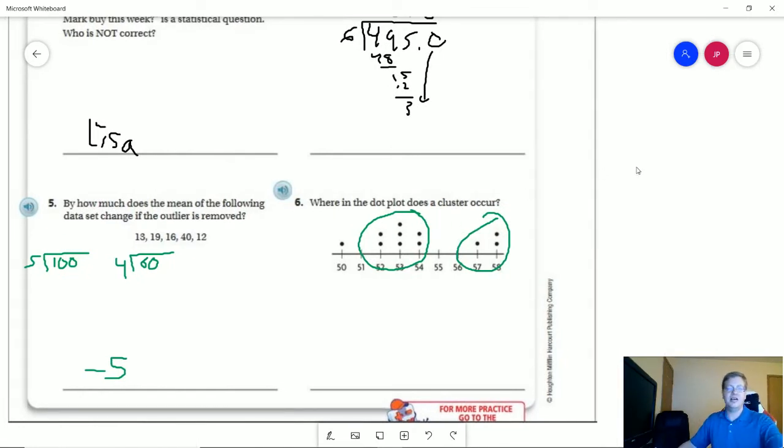Number 6, here are the two clusters that can show up in the dot plot. Again, more than one correct answer.